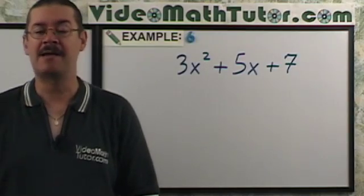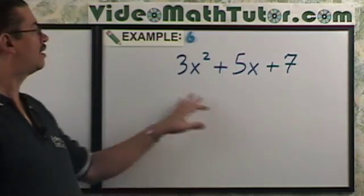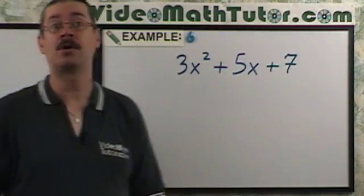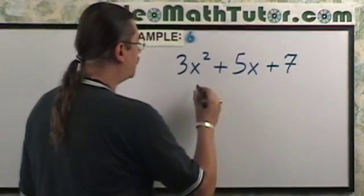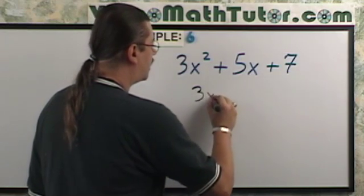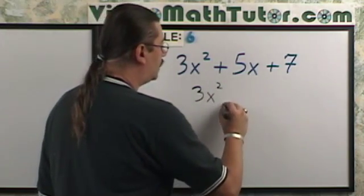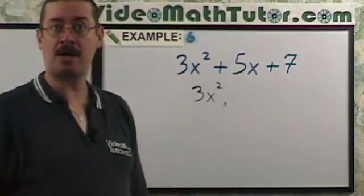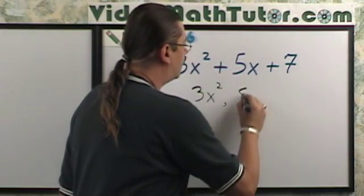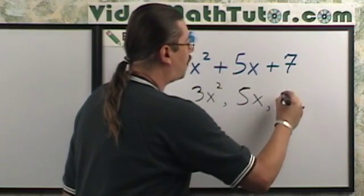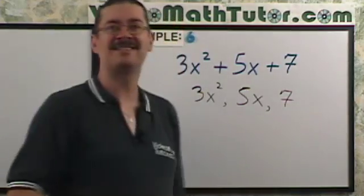For this example, I want to list the terms of this expression right here. What are they? Well, they're separated by plus signs. The first one is just 3x squared. And when you list them, you separate them with commas. The second term is 5x. And the third one is just 7.